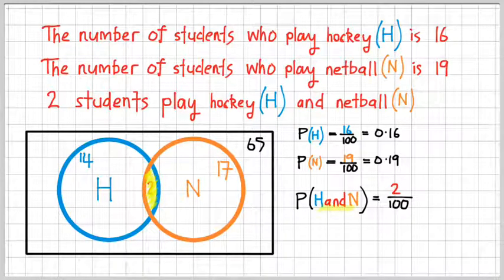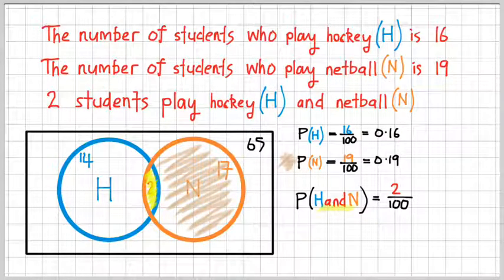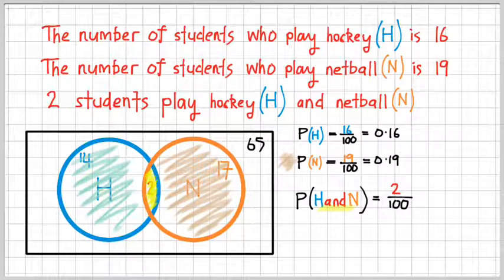Now I've shaded that area there for you just so you know where to look. I'm also going to shade in the orange part because I want to show you that this probability here relates to the entire orange circle, including the overlap, the bit in the middle. And then, forgive my shading, it's not very good. But I also want to show you that this probability relates to the entire blue circle, including the overlap. Now that's important, so please remember that.